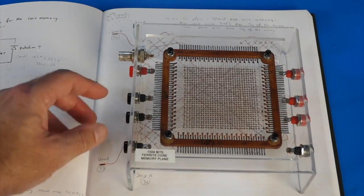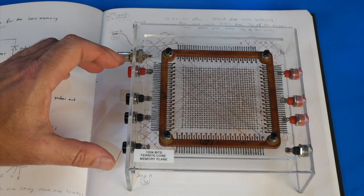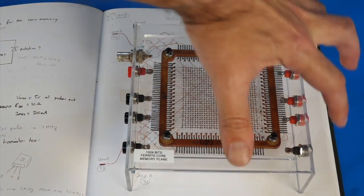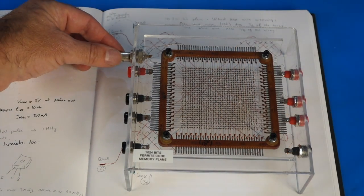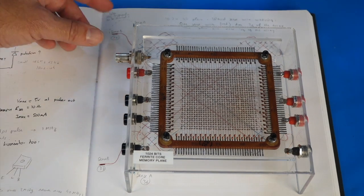Same thing, I had two X wires, less space in that one. So I have just one Y wire, the inhibit's over here, and here's the sense that I've put in one single loop.